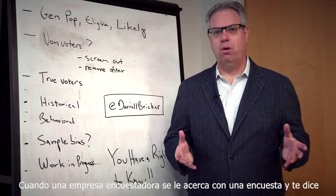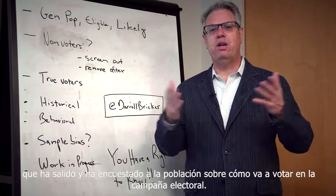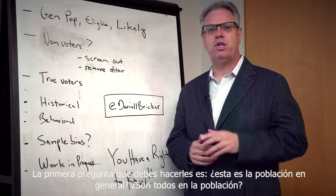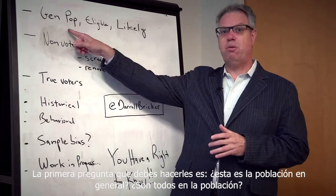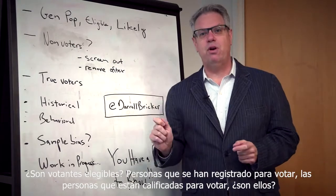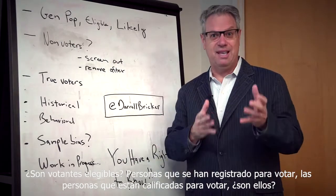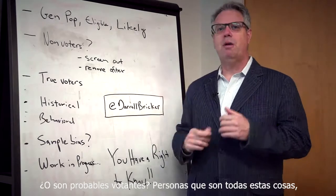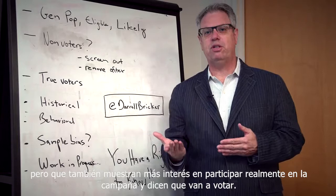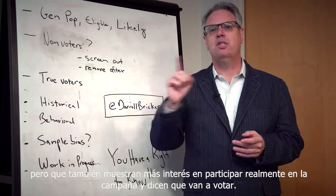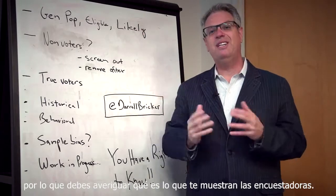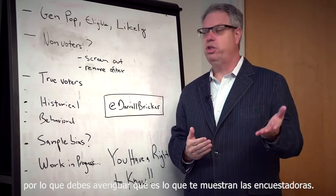When a pollster comes to you with a poll and says they've gone out and interviewed the population about how they're going to vote in the election campaign, the first question you need to ask them is: is this the general population? Is it eligible voters — people who have registered or are qualified to vote? Or is it likely voters — people who are all of these things but also showing the most interest to actually participate and say they're going to show up? You'll tend to get three very different numbers for those three categories, so you need to find out what it is that the pollster is showing you.